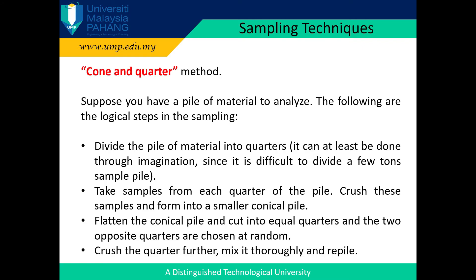One of the most commonly used sampling methods is the cone and quarter method. Suppose you have a pile of material to analyze. The logical steps in the sampling are: divide the pile of material into quarters — this can at least be done through imagination since it is difficult to divide a small sample pile. Take samples from each quarter of the pile. Crush the samples and form into a smaller conical pile. Flatten the conical pile and cut into equal quarters, and the two opposite quarters are chosen at random.